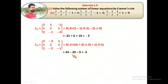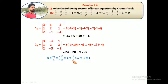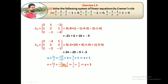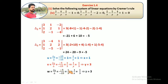Now we have delta 1, delta 2, and delta 3. So u = delta 1 / delta = minus 15 / minus 15 = 1. Since u = 1/x, we get x = 1. Then v = delta 2 / delta = minus 5 / minus 15 = 1/3, and since v = 1/y, y = 3. Finally w = delta 3 / delta = minus 5 / minus 15 = 1/3, and since w = 1/z, z = 3.